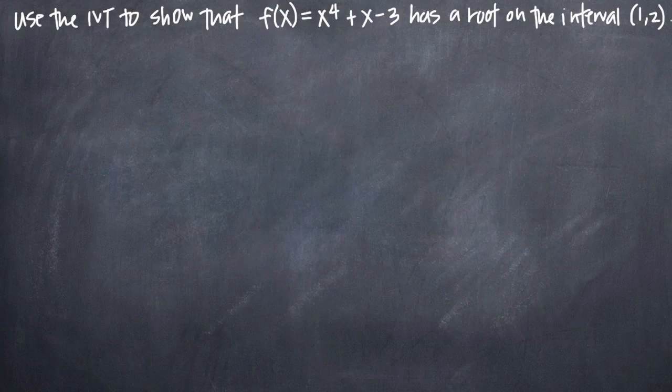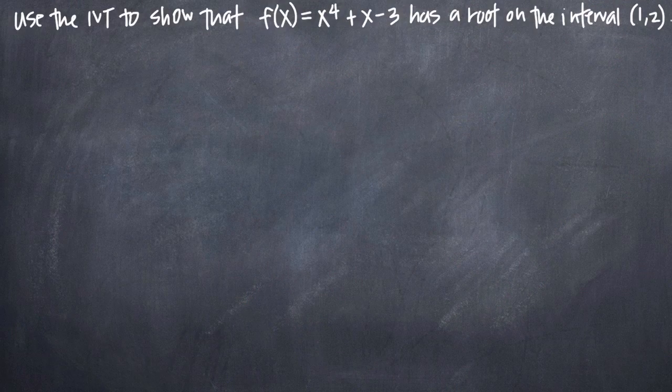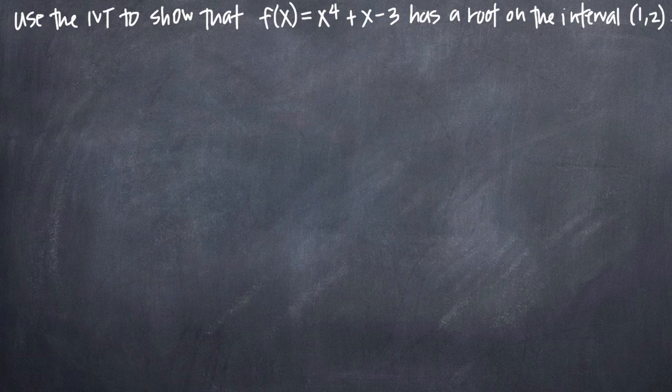In this particular problem, we've been asked to use the intermediate value theorem to show that the function f(x) = x^4 + x - 3 has a root on the interval (1,2).